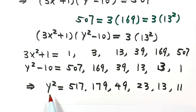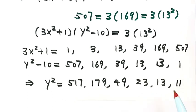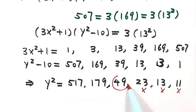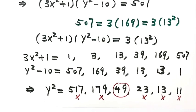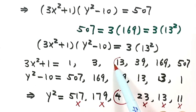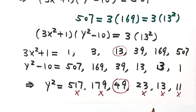Because y is an integer, y squared must also be an integer, so we check which of these numbers is a perfect square. 517 is not a perfect square; 179 is not; 49 — yes, 49 is a perfect square; 23 is not; 13 is not; 11 is not. So for y squared equals 49, the corresponding first factor is 13.